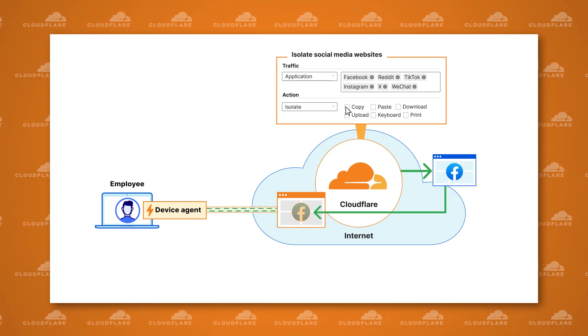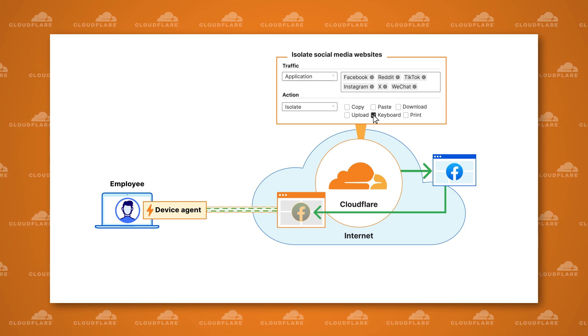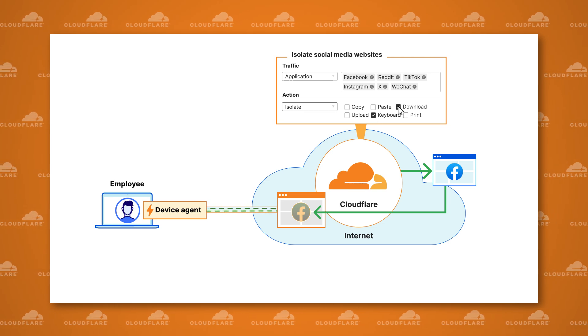We then send the results of the rendered page down to the user's device, and you can optionally turn on or off certain capabilities, such as the ability to enter text into the web page or download files. We call this Remote Browser Isolation. You can also use this service to limit access to SaaS application data for a certain set of users — for example, you might want to allow contractors or partners access to your Salesforce instance, and use our browser isolation to prevent copy-and-paste, printing, or downloading of Salesforce data.